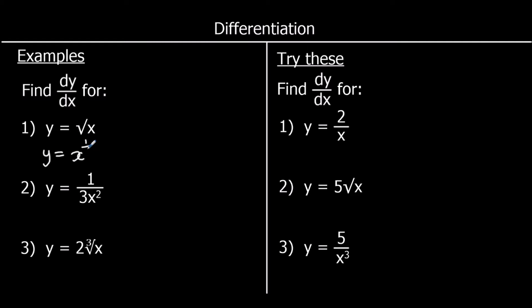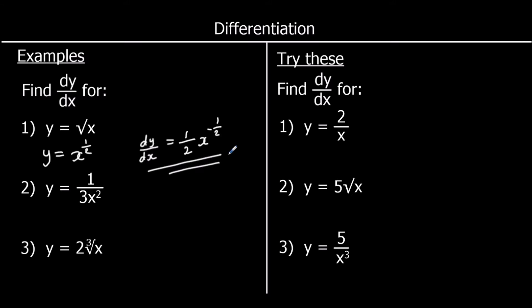So we can say y equals x to the power of one half, and now we can differentiate. dy/dx: we times by the power, so a half times one is just a half, and take one away from the power — one half take away one is minus a half. So that's our dy/dx, our gradient function.